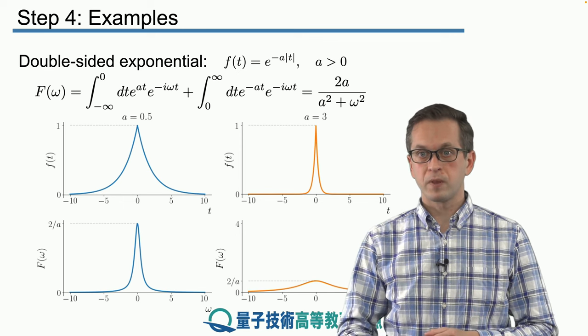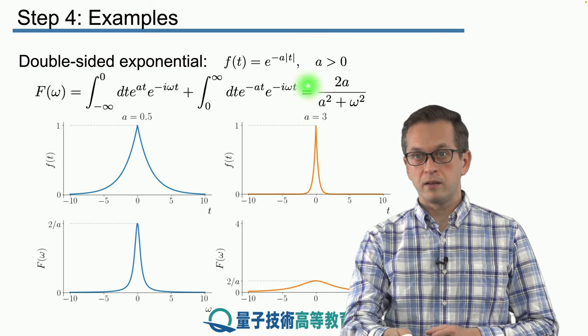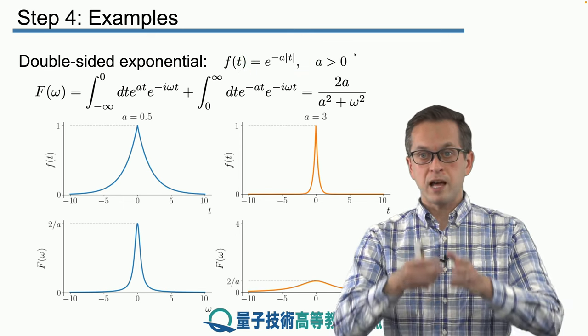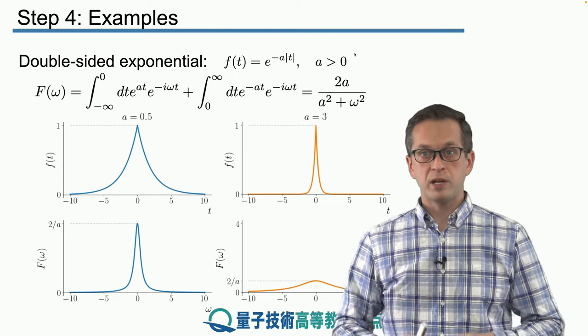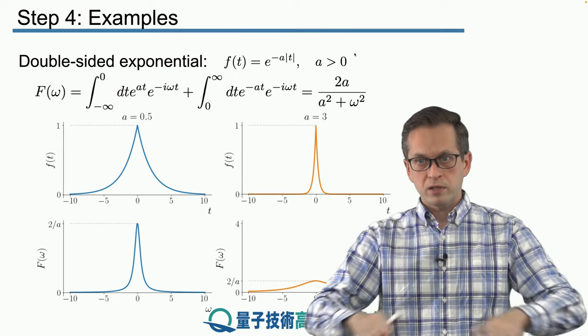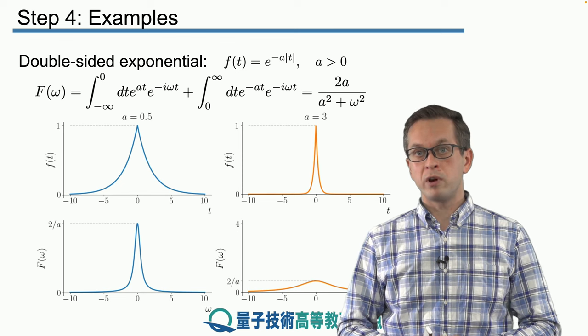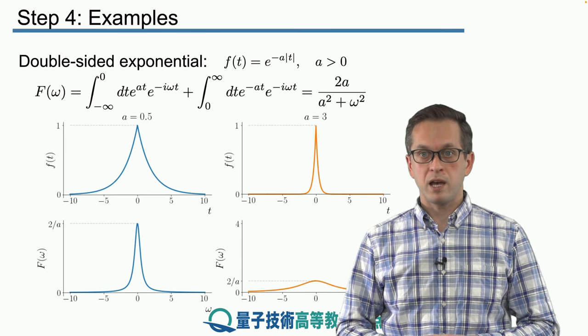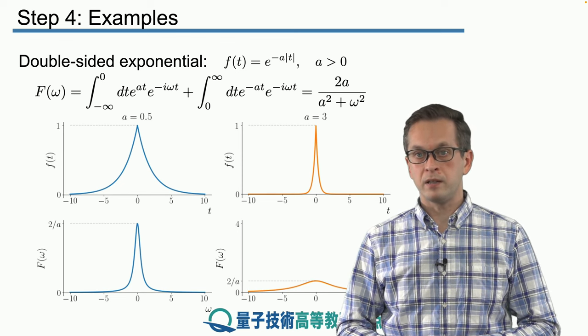What's interesting is if we plot the same function, but for a different a. Let's say that now a is equal to three, so it's higher. What we get from looking at this function is that now the function, again, has its peak at t equals to zero, but it falls down, it goes to zero a lot more quickly, simply because a is larger in this scenario.